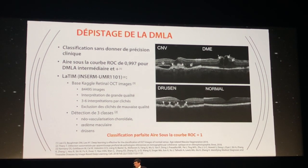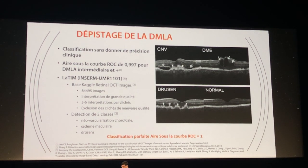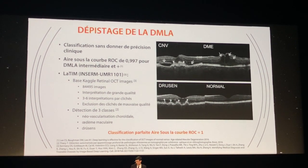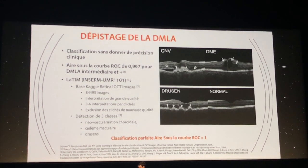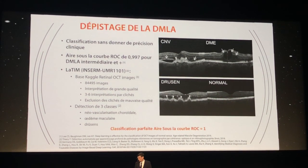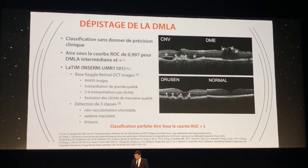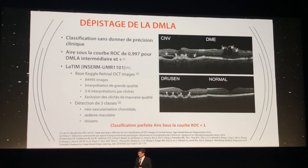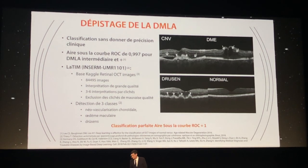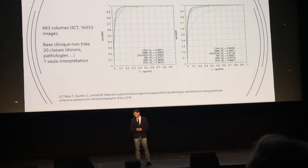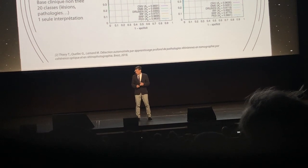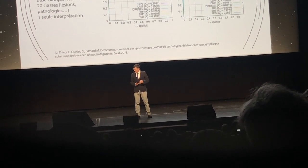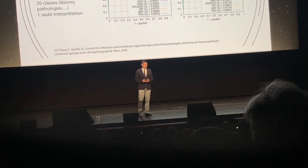A team has also done work on AMD using an international database — the Kaggle Retinal OCT Images dataset — which contains almost 85,000 images with very high interpretation quality, between 3 and 6 interpretations per image, excluding poor-quality images. They obtained a perfect classification of 1 for the 3 classes cited. However, this is a particularly high-quality dataset; if we use a routine clinical database as we did in Brest — with 663 OCT volumes and 16,000 images, with a single interpretation — we obtained AUC values around 0.97, which is quite respectable.